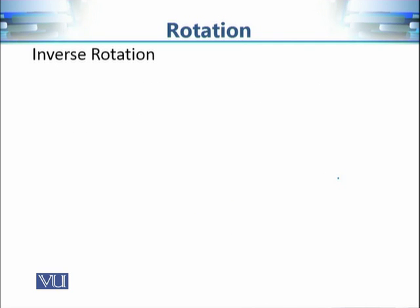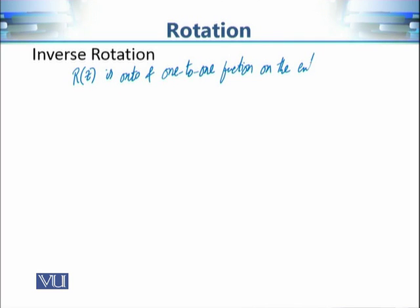The inverse of this rotation transformation exists because R(z) is a one-to-one and onto function on the entire complex plane. Since it is one-to-one and onto, we can talk about what the inverse of this rotation transformation is.